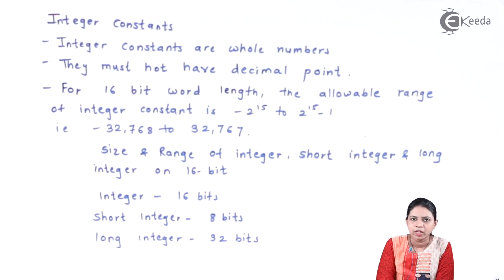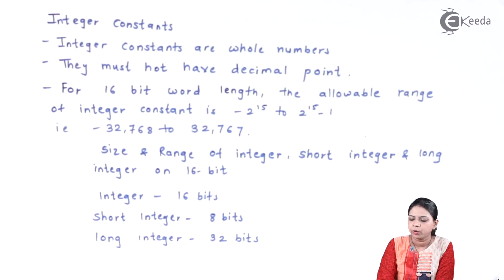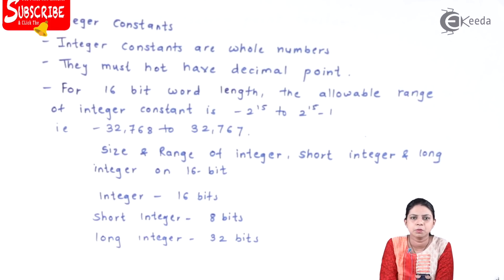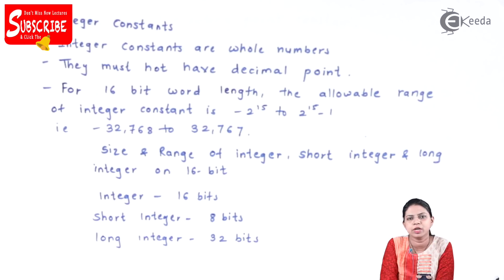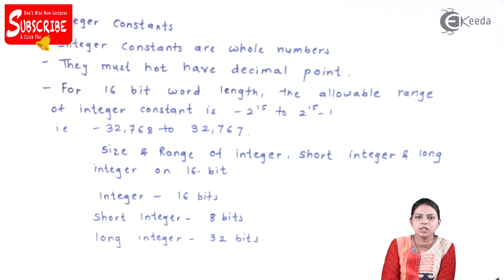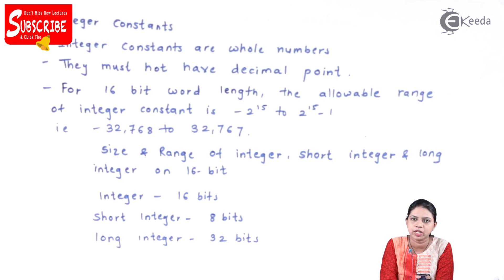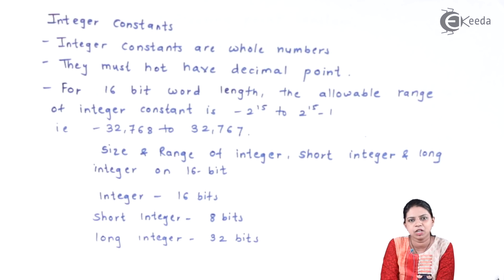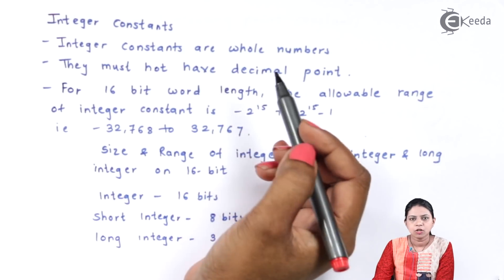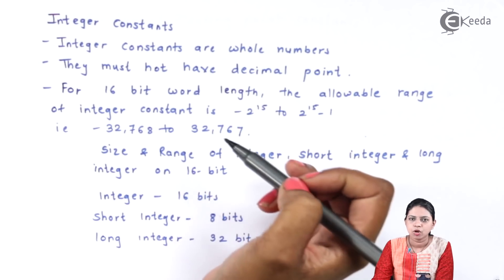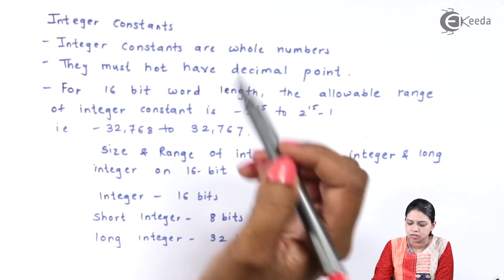Number one is called integer constant. Integer constants are whole numbers — whole numbers means they take numbers without a decimal point. So whenever in the program we deal with numbers without a decimal point, at that time we make use of integer constant. We will see what the rules of integer constant are.